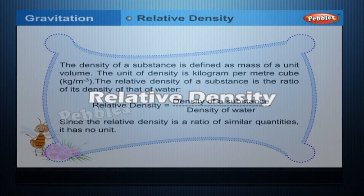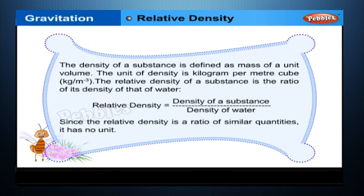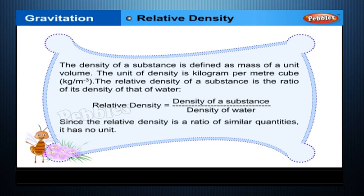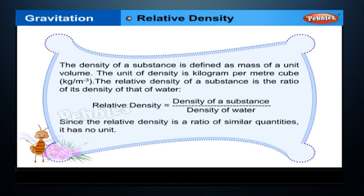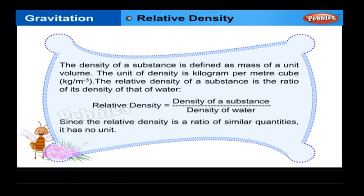Relative density: the density of a substance is defined as the mass of a unit volume. The unit of density is kilogram per metre cube. The relative density of a substance is the ratio of its density to that of water: relative density = density of substance ÷ density of water. Since relative density is a ratio of similar quantities, it has no unit.